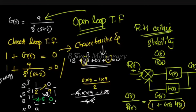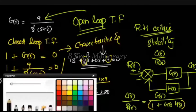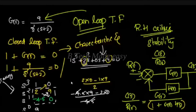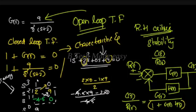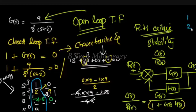Now, we formed this Routh array. The Routh array is formed. We found the elements: 1, 2, minus 4.5, and 9. Then: minus 4.5 into 9 minus 2 into 0, divided by minus 4.5 gives the last element. The first column elements are 1, 2, minus 4.5, 9.